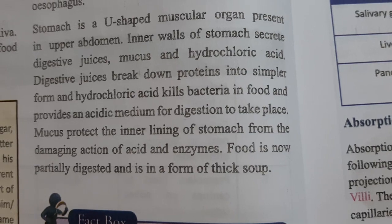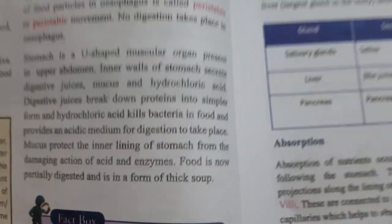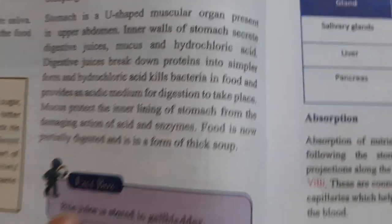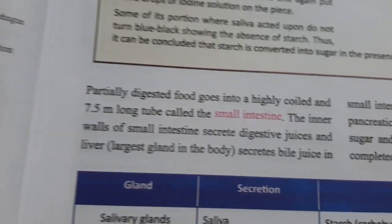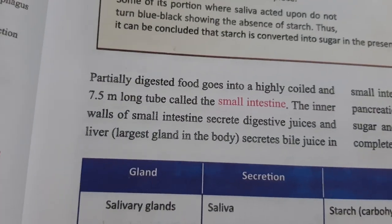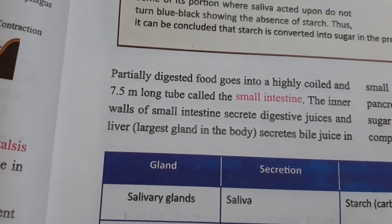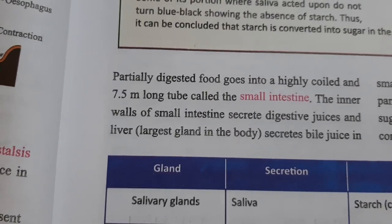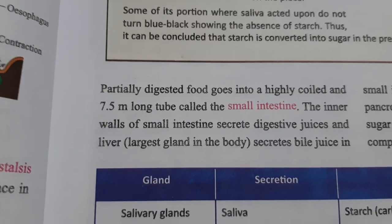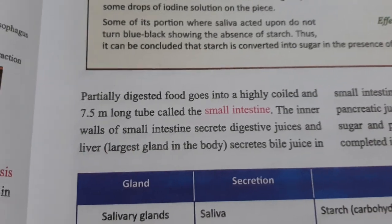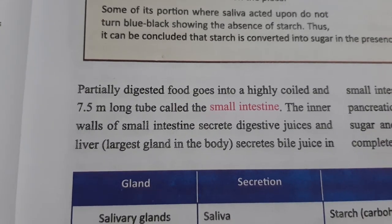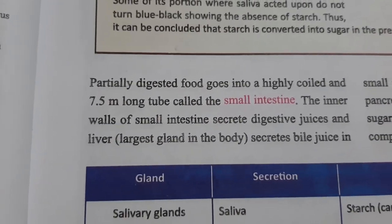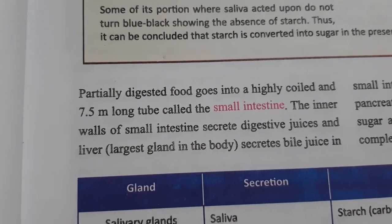Food is now partially digested and is in the form of a thick paste. It then moves into the small intestine, which is a highly coiled structure approximately 7.5 meters long.